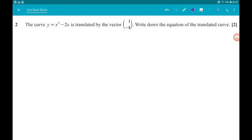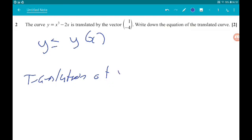Question 2: The curve y equals x cubed minus 2x is translated by the vector (1, -4). Write down the equation of the translated curve. Let's think of y as y of x. Now translation of y of x by (1, 0), so moving it one place to the right, is y of x minus 1.